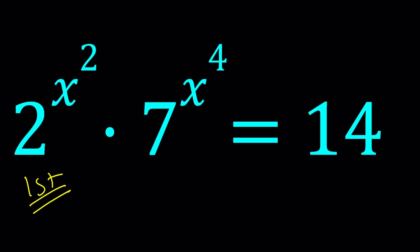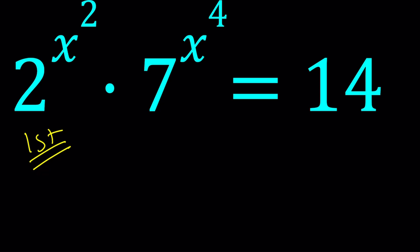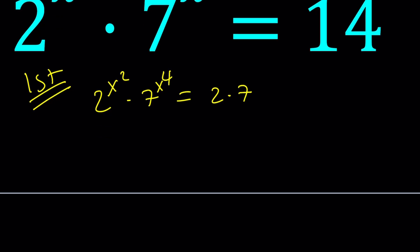For my first method, I'm going to use kind of an exponential approach as much as possible, and then we'll use a little bit of logarithms. Since 14 is 2 times 7, I want to break it down that way — put the powers of 2 together and the powers of 7 together. Dividing gives me 2 to the power x squared minus 1, and 7 to the power 1 minus x to the fourth.